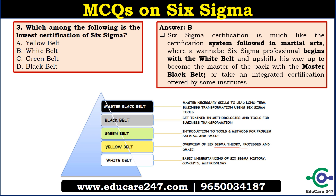So basically, you learn the basics, then you further improve at each stage. This is the certification path for Six Sigma — it starts with White Belt and goes to Master Black Belt. Remember this sequence, as it can be asked in the examination.